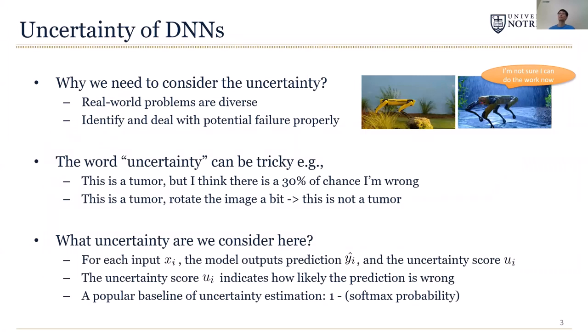Why do we need to consider uncertainty in the context of deep neural networks? The reason is that real-world problems are so diverse and have so many edge cases. In some critical tasks such as medical imaging or robot control, it's extremely difficult to train a network to achieve satisfactory accuracy. Therefore, we need a measure of confidence or uncertainty to help us identify and deal with potential failures properly.